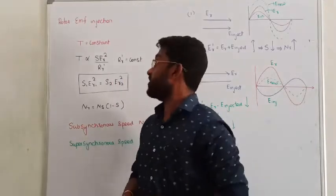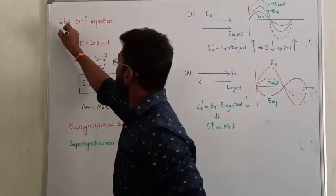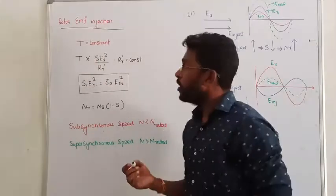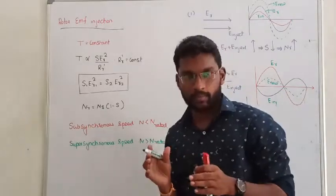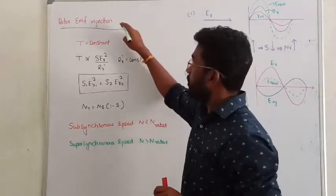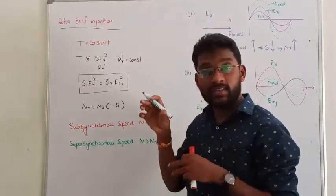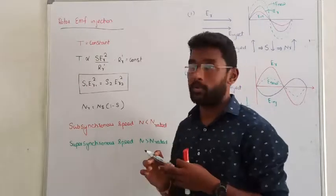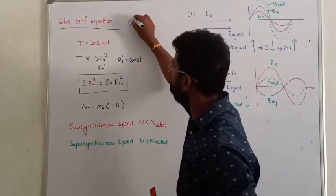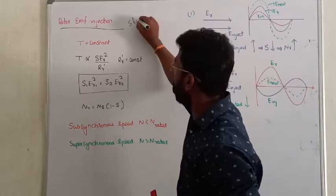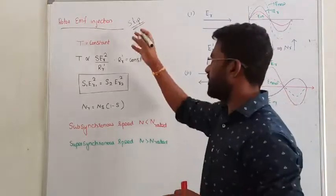Let us see the next method called Rotor EMF Injection Method. This is a very simple method — it is a directness of memory control method. The Rotor EMF Injection Method is only possible in the case of a slip ring induction motor.